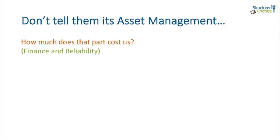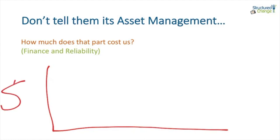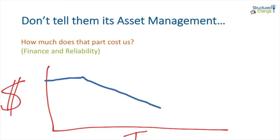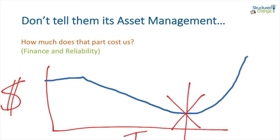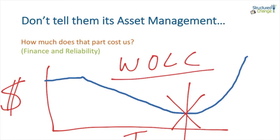How much does this part cost us? If you look at a cost chart with dollars on one axis and time on the other, you have the upfront capital cost and then a maintenance cost. Through maintenance and supply costs it tends to get cheaper in those early years, but when maintenance starts to overtake as the asset starts to underperform, it starts to cost you money. Finance handles the capital part, and reliability bridges the two to determine what is the whole-of-life cost — very important to understand.